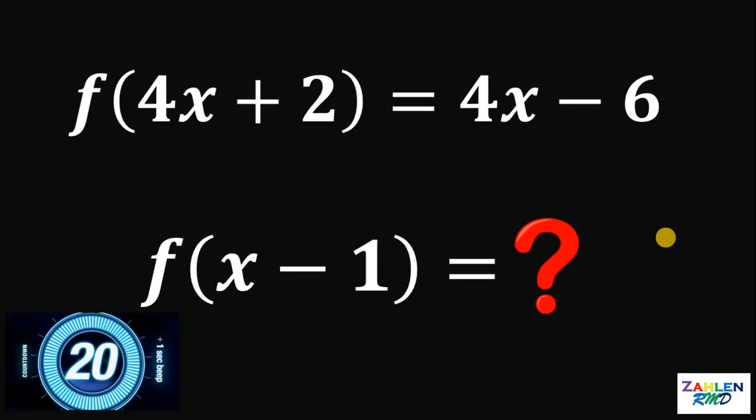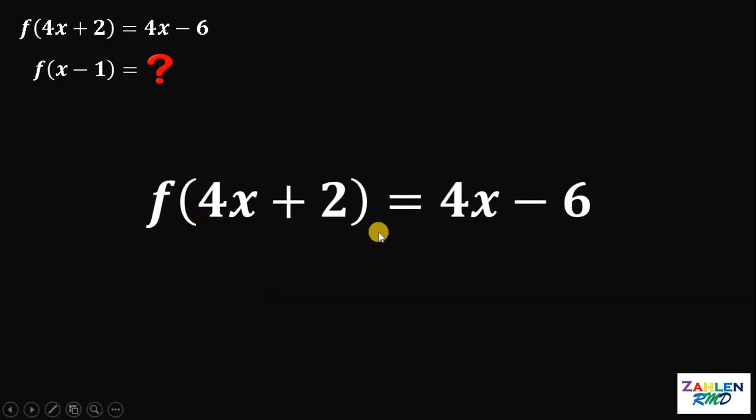Now, time's up. Let's answer this question together. To answer this question, let's get first our given function. We have f of 4x plus 2 equals 4x minus 6. And our goal is to find the value of f of x minus 1.